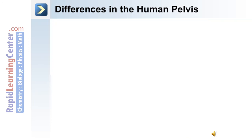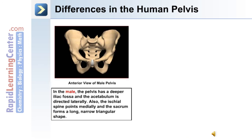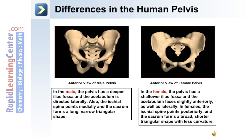Additional differences in the human pelvis between males and females: in males, the pelvis has a deeper iliac fossa and the acetabulum is directed laterally. The ischial spine points medially, and the sacrum forms a long, narrow triangular shape. In females, the pelvis has a shallower iliac fossa and the acetabulum faces slightly anteriorly as well as laterally. The ischial spine points posteriorly, and the sacrum forms a broad, shorter triangular shape with less curvature.